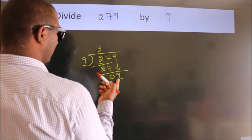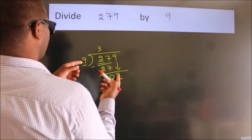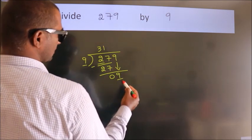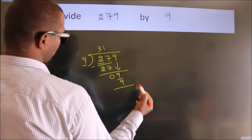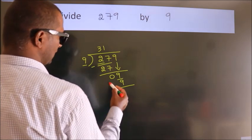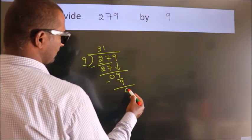When do we get 9? In the 9 table. 9 once is 9. Now, we subtract. We get 0.